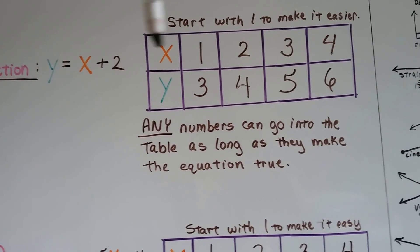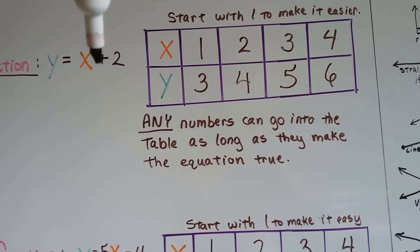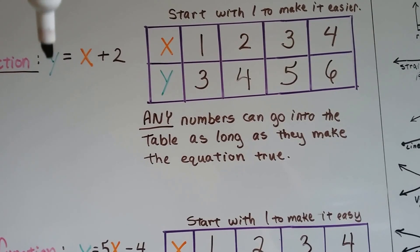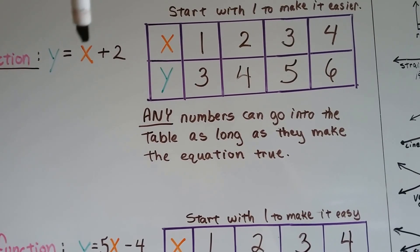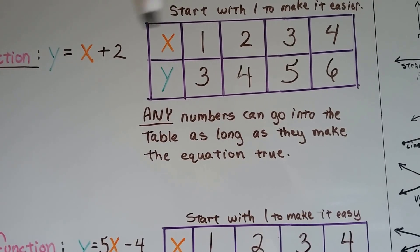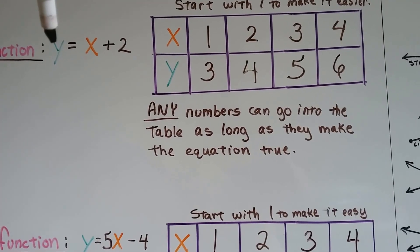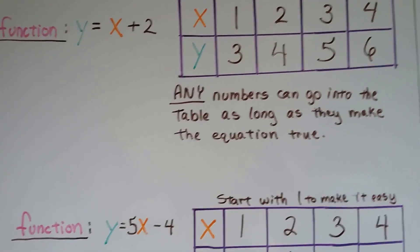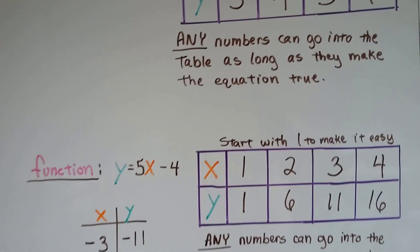If x is 3, these are all the x values, if x is 3, 3 plus 2 is 5, y equals 5. If x represents 4, then that's 4 plus 2, y equals 6. Any numbers can go in there as long as it makes the equation true.